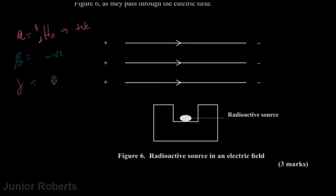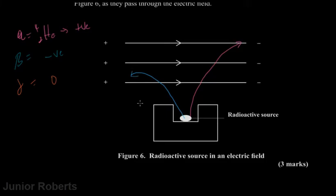The gamma particle has a charge of zero. With a uniform electric field having a positive and a negative terminal: the alpha particle, being positive, is deflected towards the negative terminal. The beta particle, being negative, is deflected towards the positive terminal, and is more significantly deflected than the alpha. The gamma particle, having zero charge, passes straight through.